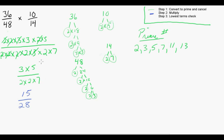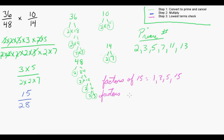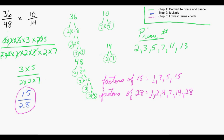And unless we've made a mistake, that should be in lowest terms because we converted to prime factors. Moving on to step 3, we list the factors of 15: 1, 3, 5, and 15. And the factors of 28 are 1, 2, 4, 7, 14, and 28 itself. The only thing they have in common is 1, so we can state that 15 over 28 is in lowest terms.